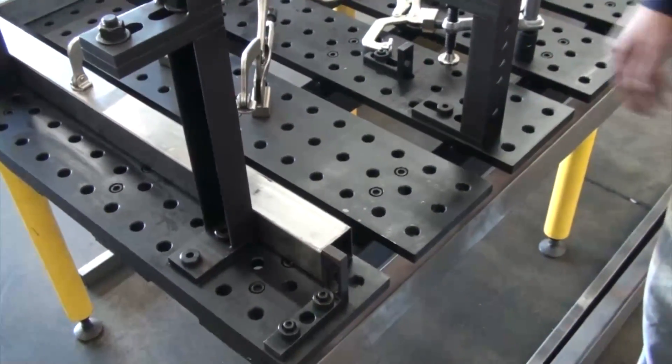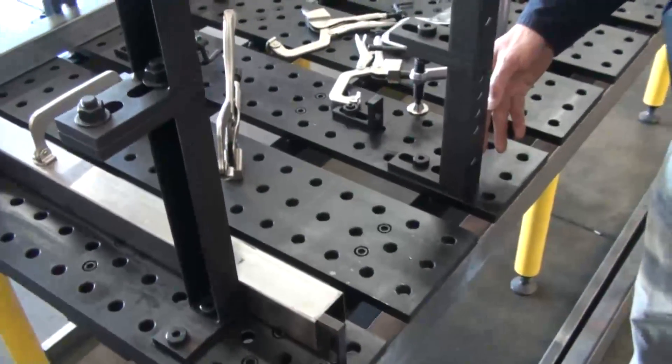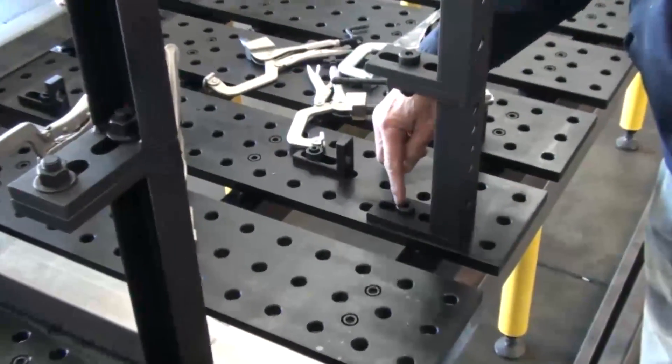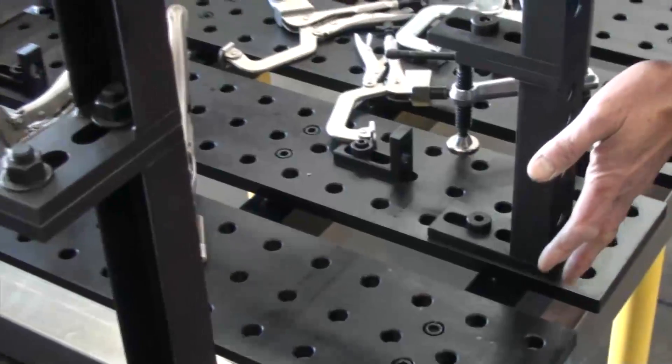On the other side of our frame, we've mounted the Economy clamping squares using the slotted base, so we can adjust as required to set the width of our frame.